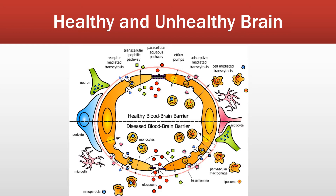CNS vessels are continuous non-fenestrated vessels, but also contain a series of additional properties that allow them to tightly regulate the movement of molecules, ions, and cells between the CNS. This heavily restricted barrier capacity allows BBB's endothelial cells to tightly regulate CNS homeostasis, which is critical to allow for proper neural function.